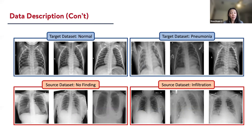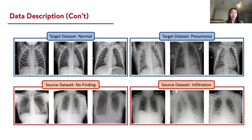I listed several images from the classes in each dataset. The domain difference between the two datasets is visually recognizable. The target dataset images are from patients under five years old, and these images are visually more clear than those in the source dataset. Those will be the datasets we use, and let's move on to the methods.